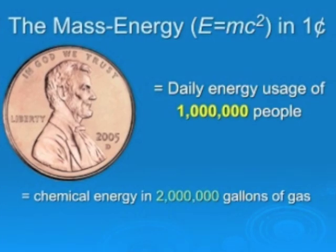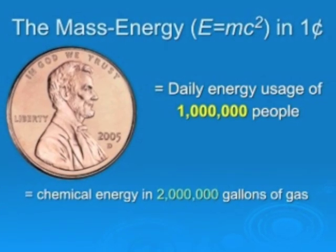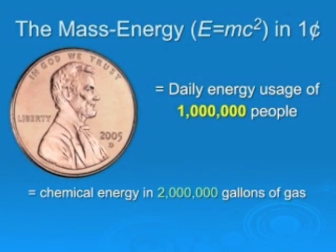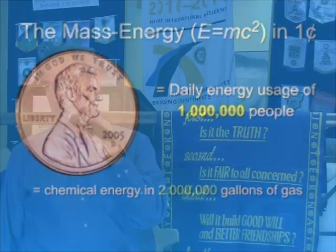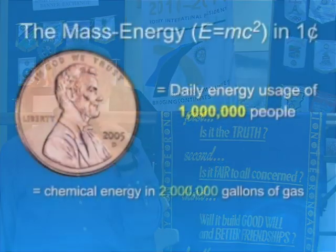How large? If we were to take a single U.S. penny and use Einstein's equation, we would be able to supply all the energy that a million people use in a day — a million people's worth of energy for one penny. Equivalently, that penny contains as much mass energy as we now get by burning two million gallons of gasoline. So some of you may be thinking maybe the fair price of gasoline really is two million gallons per penny!